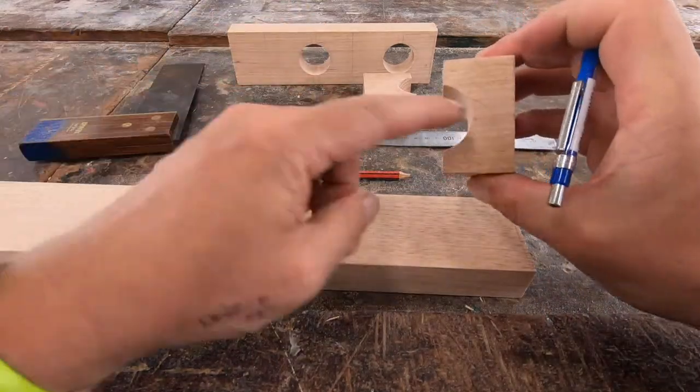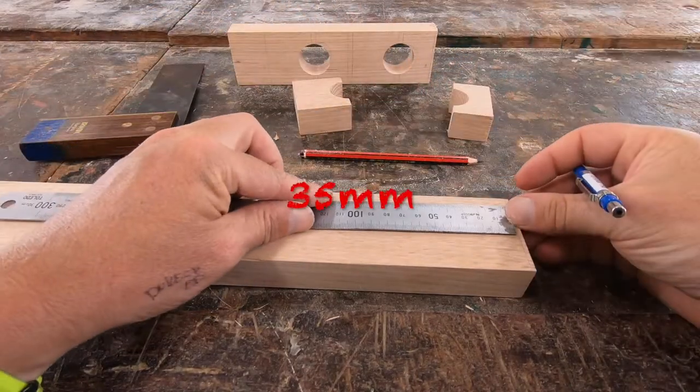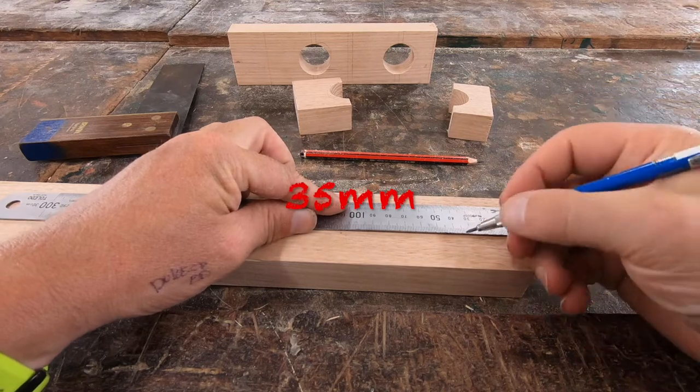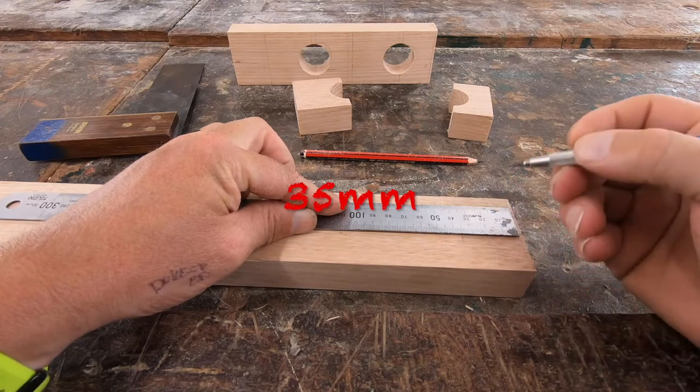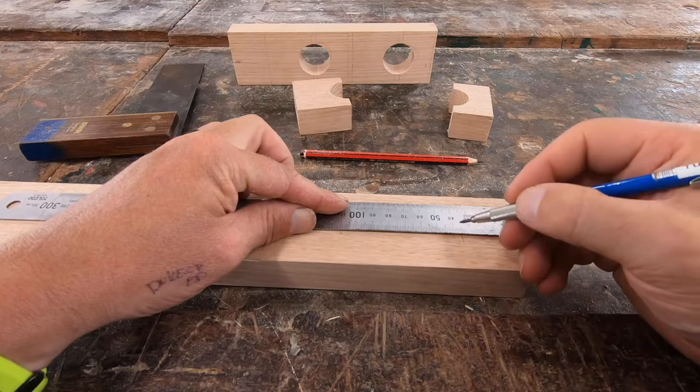The first measure I'm going to mark out is this smaller block and that is 35 millimeters. So I'm going to put my rule on the end there and mark out 35 millimeters. Then I'm going to put another line at 35 millimeters.